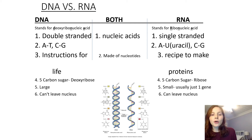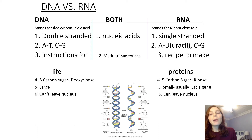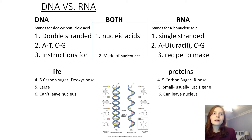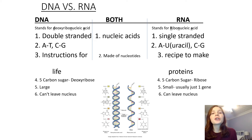DNA contains the instructions for life — it contains the blueprints for every gene in your body and how to make every single protein. RNA, however, is like the recipe to make proteins. RNA codes for one single gene and provides instructions for making a single protein. Because of that, RNA is much smaller than DNA, since DNA has thousands of genes on each chromosome.